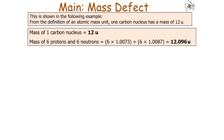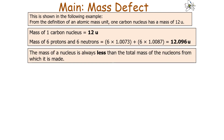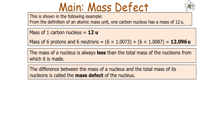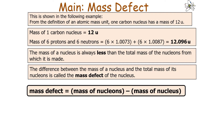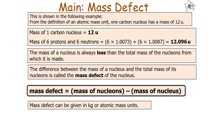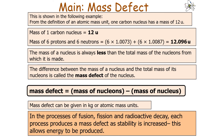For example, one carbon nucleus has a mass of 12U, but the mass of six protons and six neutrons individually is 12.096U, confirming that the mass of a nucleus is always less than the total mass of its individual nucleons. The difference is called the mass defect of the nucleus. We can calculate the mass defect in either kilograms or atomic mass units. In nuclear fusion, fission, and radioactive decay, each process produces a mass defect as stability increases, which is why these processes release energy.